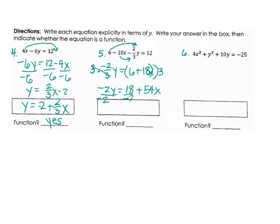And then I'm going to come back and divide everything by negative 2. You can do all of that in one step if you want to, but if you have trouble with fractions, I encourage you to divide it up. And so, that's going to give you y equals negative 9 minus 27x or you can write that y equals negative 27x minus 9 – don't care which one – and then is this a function? Yes.